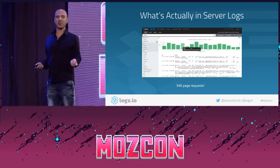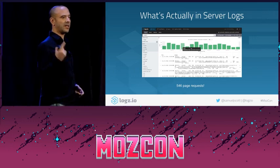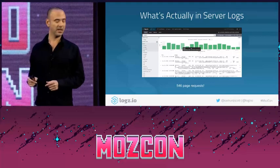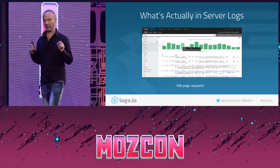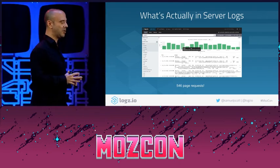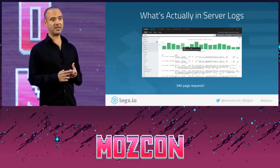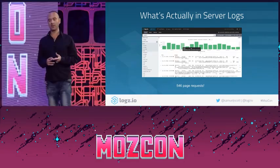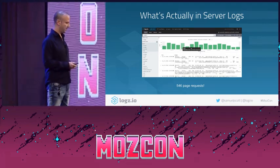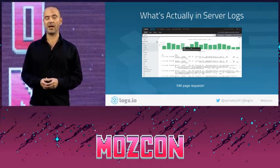You might ask yourself, what's the big deal? It's not that big of a difference in the number, and it's only one day. But think about the implications of this statement. Take this difference in crawls over one day and think about what it means in terms of the differences you will see in Google Analytics versus your server logs in terms of visits, conversions, leads, transactions, and everything else. The data that you see in Google Analytics is wrong. It's not accurate.